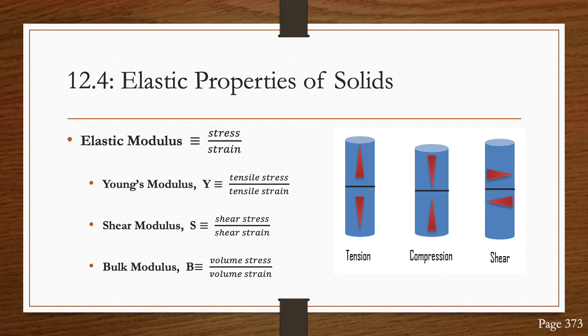Shear modulus measures the resistance of motion of the planes within a solid parallel to each other, also known as shearing. Bulk modulus measures the resistance of solids or liquids to changes in their volume.